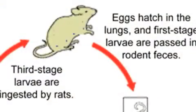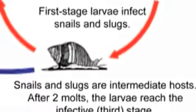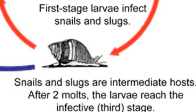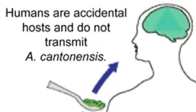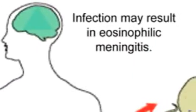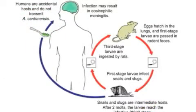We cannot get the disease from the rat – we need to get it from the slug. The nematodes go from the slug to humans or rat. They first go to the brain and then to the lungs, and then they lay eggs which are passed in the feces, and then they can infect the slug.